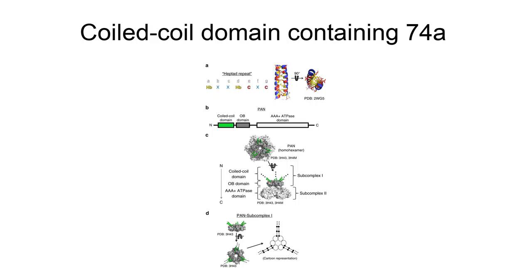Coiled-coil domain containing 74A is a protein that in humans is encoded by the CCDC74A gene. The protein is most highly expressed in the testis and may play a role in developmental pathways.